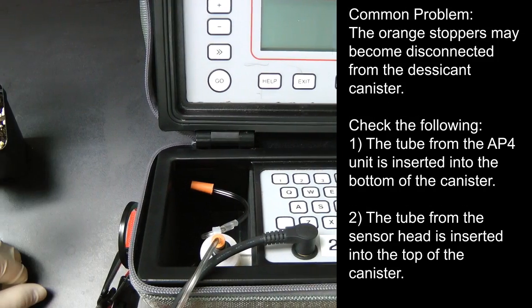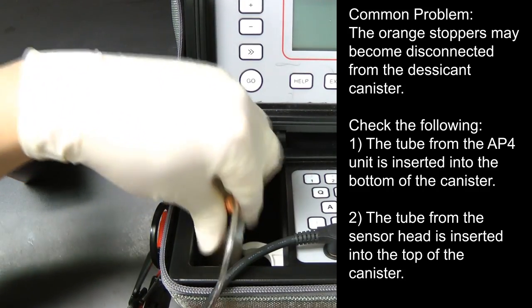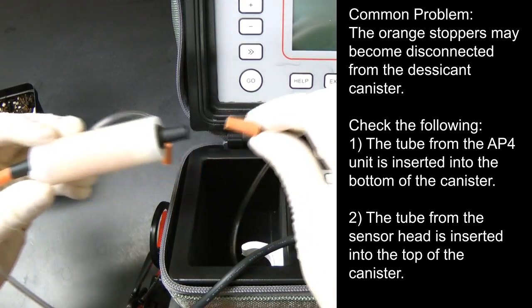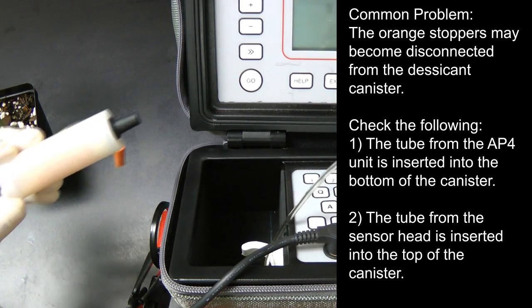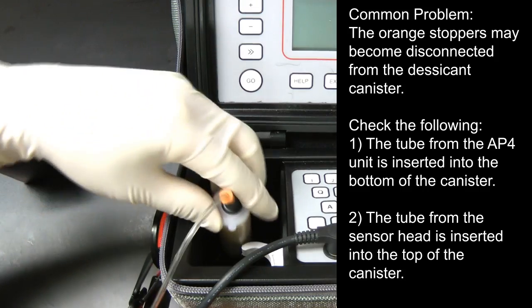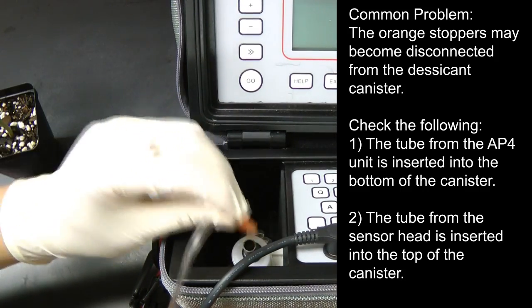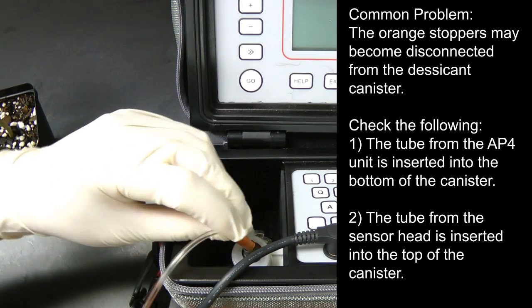The orange stoppers becoming disconnected from the desiccant canister is a common problem that you may encounter. Check the following: First, that the tube from the AP4 unit is inserted into the bottom of the canister. And second, that the tube from the sensor head is inserted into the top of the canister.